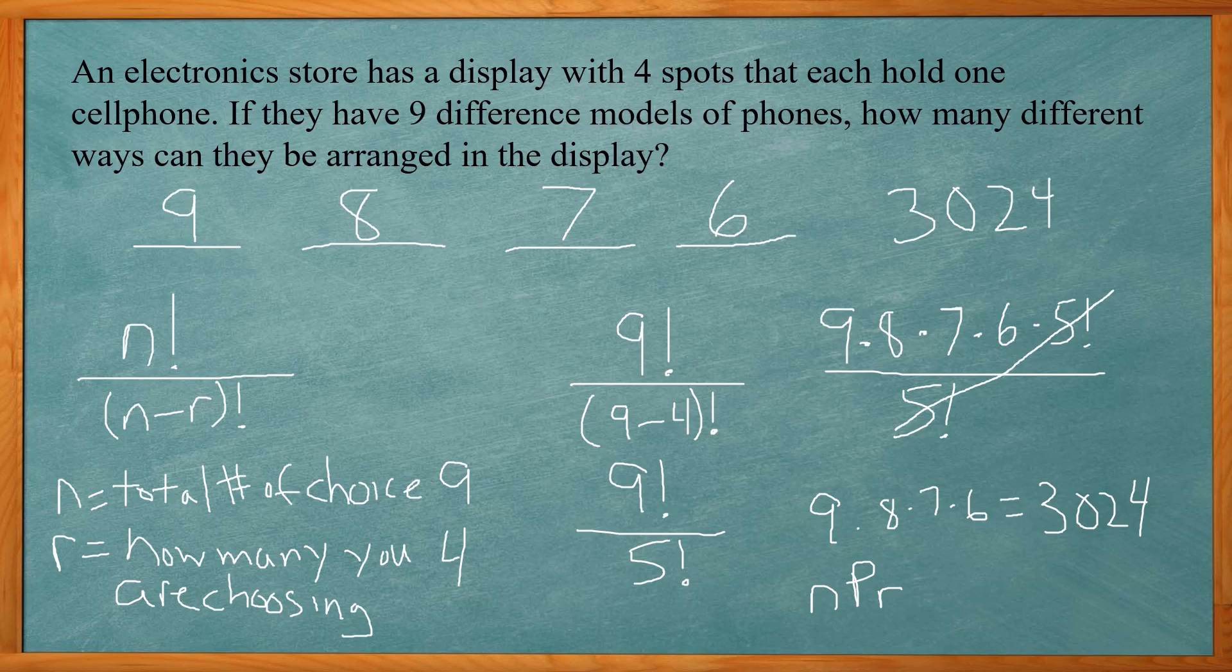So this problem involved permutations where it had how many ways you can order something and there's a distinct spot for each of them. You simply figure out how many options you have for each spot, or you can use the permutation formula.